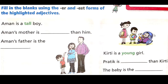The second one is: Kirti is a young girl — the adjective here is young. Pratik is younger than Kirti, as we are making a comparison between two people. And the last one: the baby is the youngest.